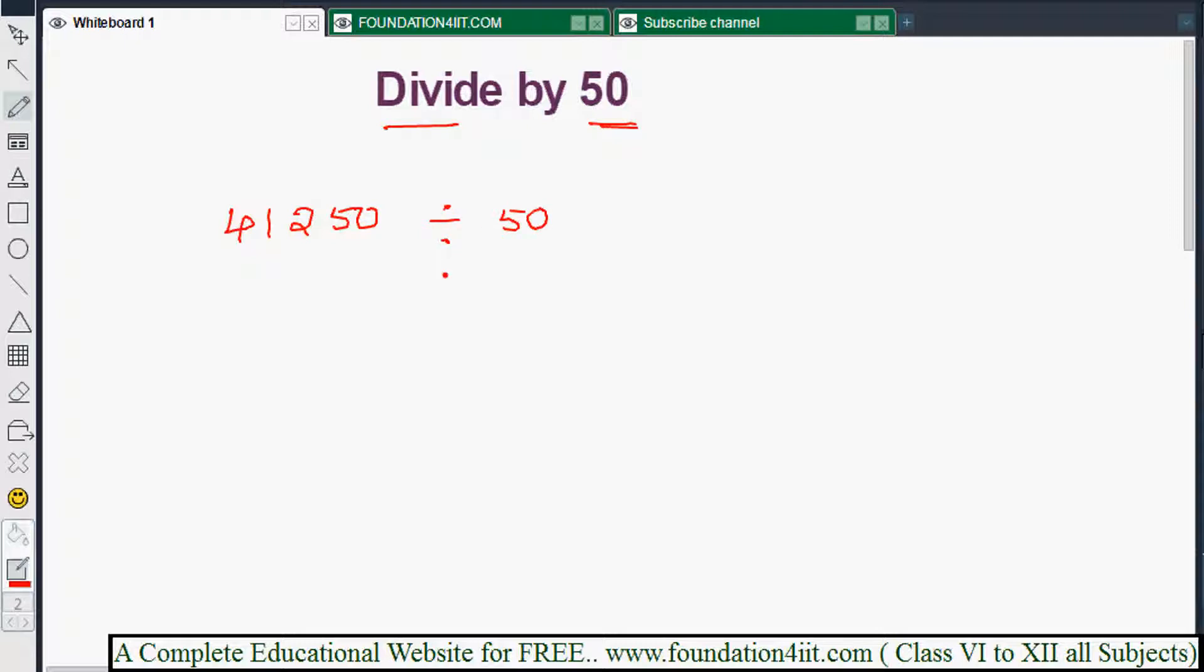Just multiply by 2 first. Whatever question is given, multiply by 2 first. Because why 2 only? We can write 50 as nothing but 100 by 2, right? 100 by 2 is 50. So that means dividing by 50 means that is 2 by 100. That's why we multiply by 2 first.